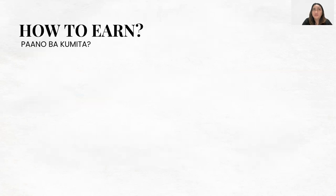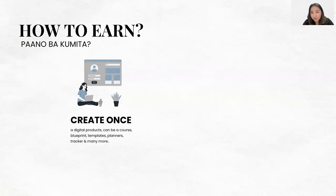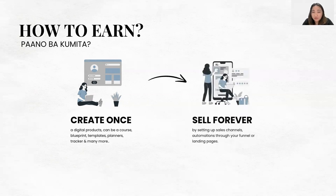So how do you earn? Here's the thing about the digital product business: you create once. A digital product can be a course, a blueprint, templates, planners, trackers, and many more. You create it, and then you sell it forever by setting up sales channels, automations through your funnel, or landing pages.